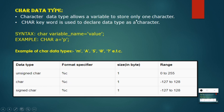Let's start with the character data type. Character data type allows a variable to store only one character — you cannot store more than one character. For example, if I want to store my name 'Arun', I cannot use a character because character supports only one character.